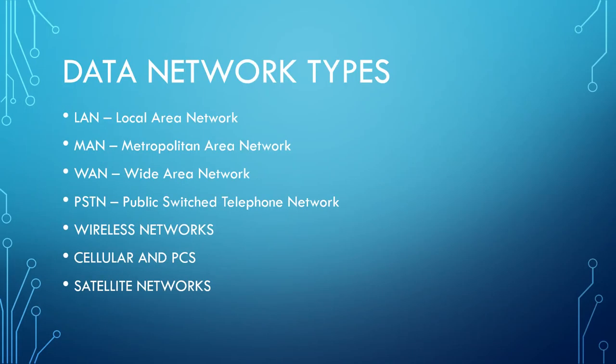When we examine Data Network Types, we examine various types of networks. These may include LAN — Local Area Network, MAN — Metropolitan Area Network, WAN — Wide Area Network, PSTN — Public Switched Telephone Network, Wireless Network, Cellular and PCS, and Satellite Networks. These are various forms of networking types.